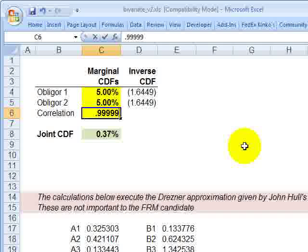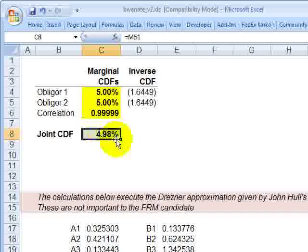If they're almost perfectly correlated, this joint probability is almost the 5% because they move completely in tandem. So that's a summary. This is David Harper, the Bionic Turtle. Thanks for your time.